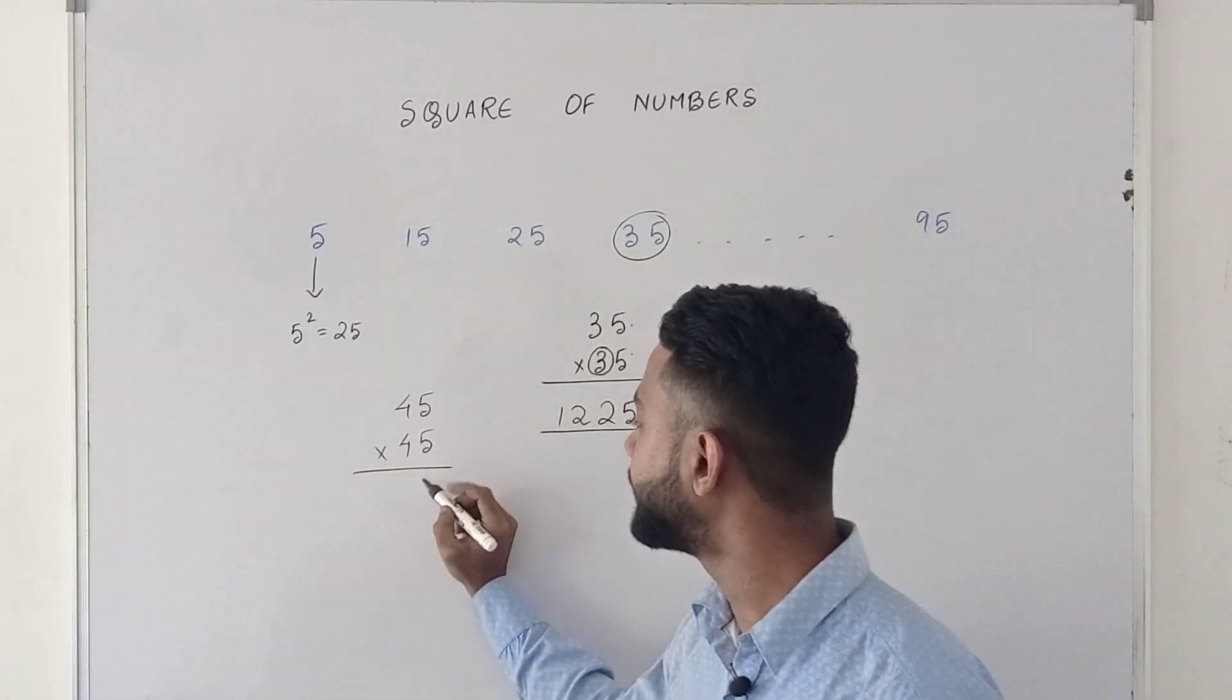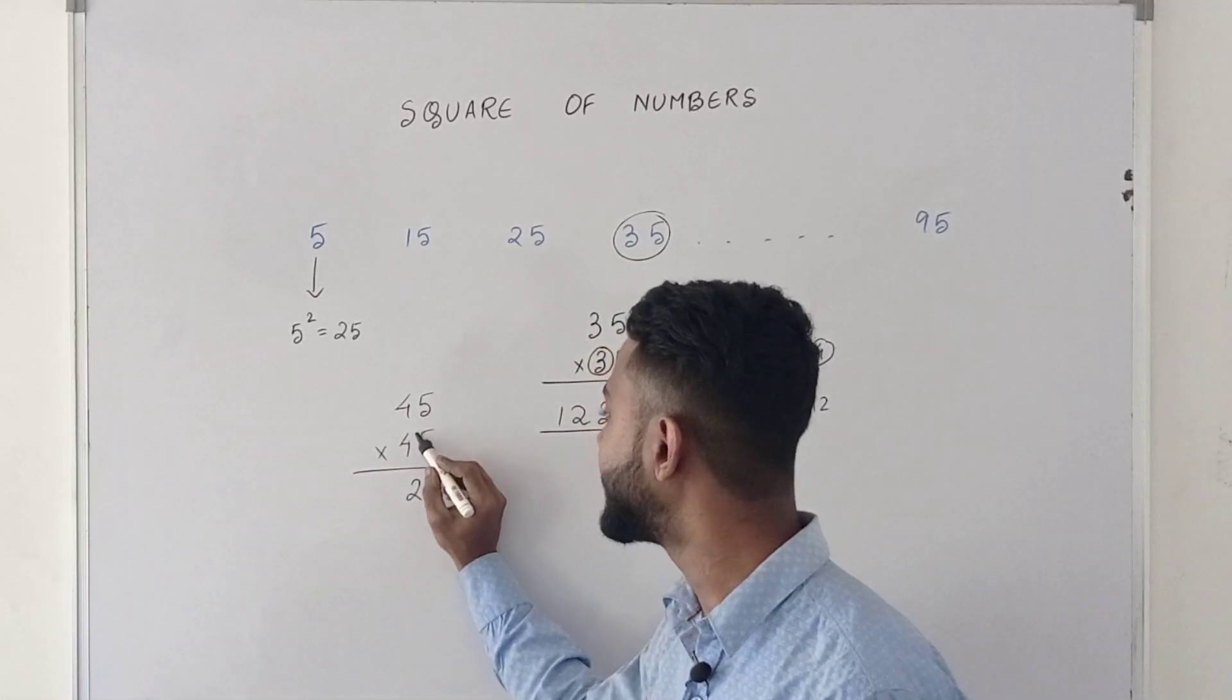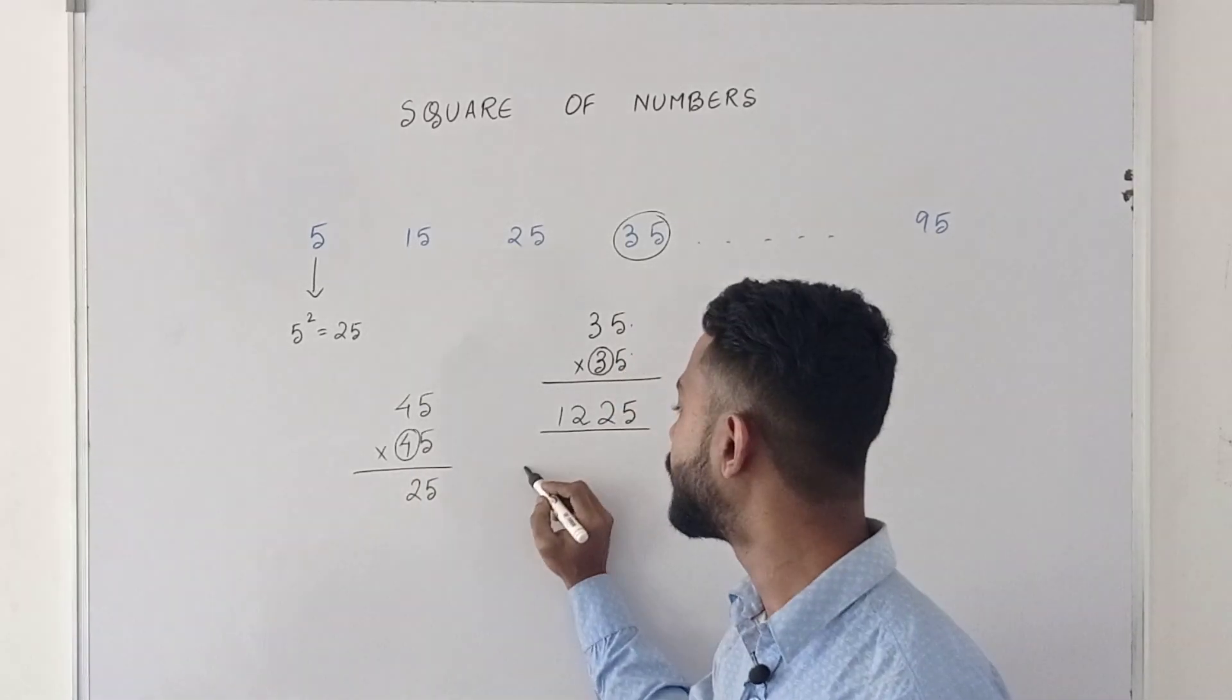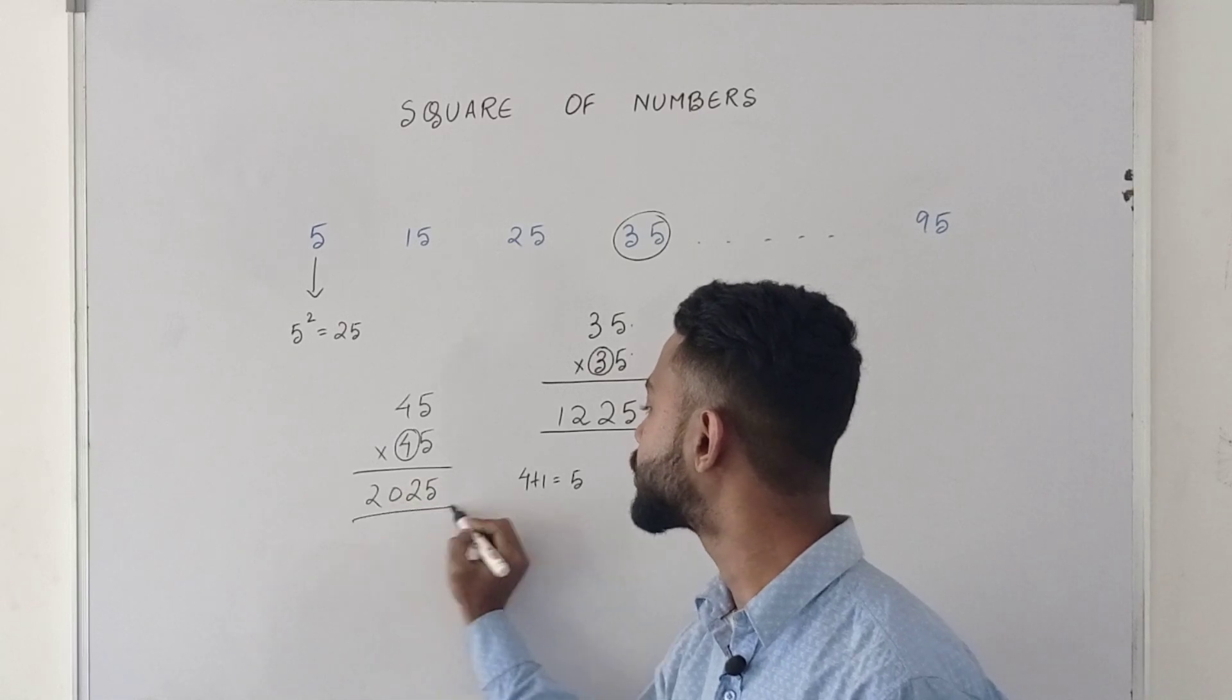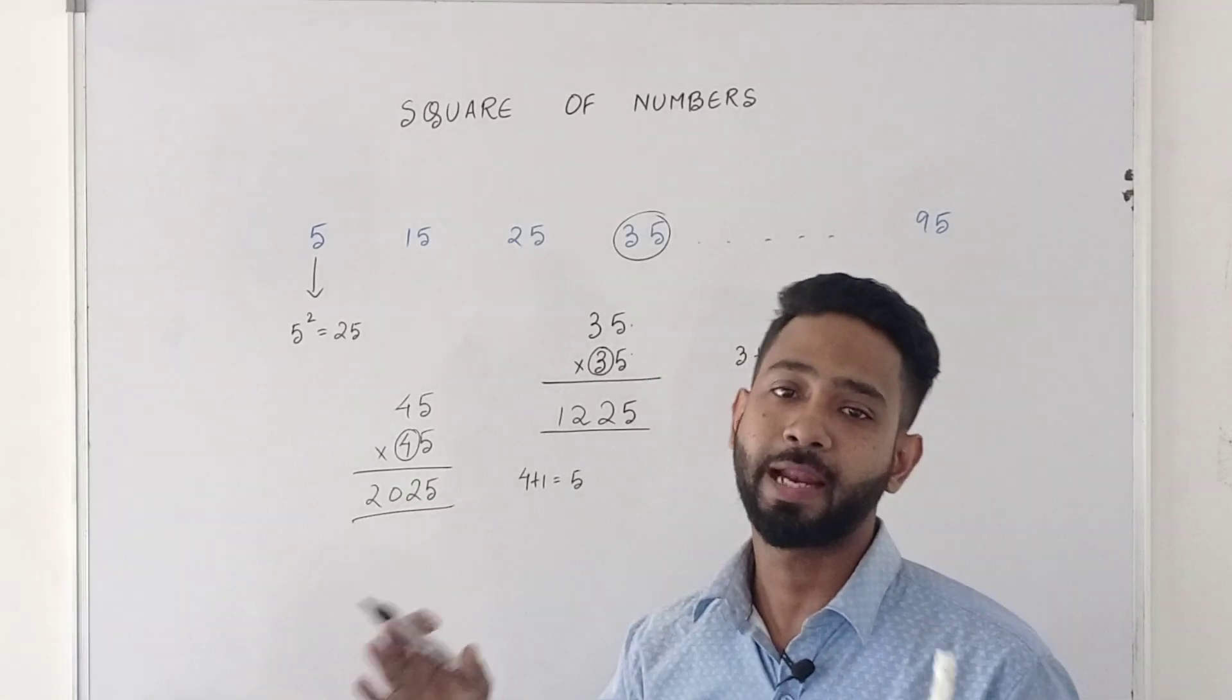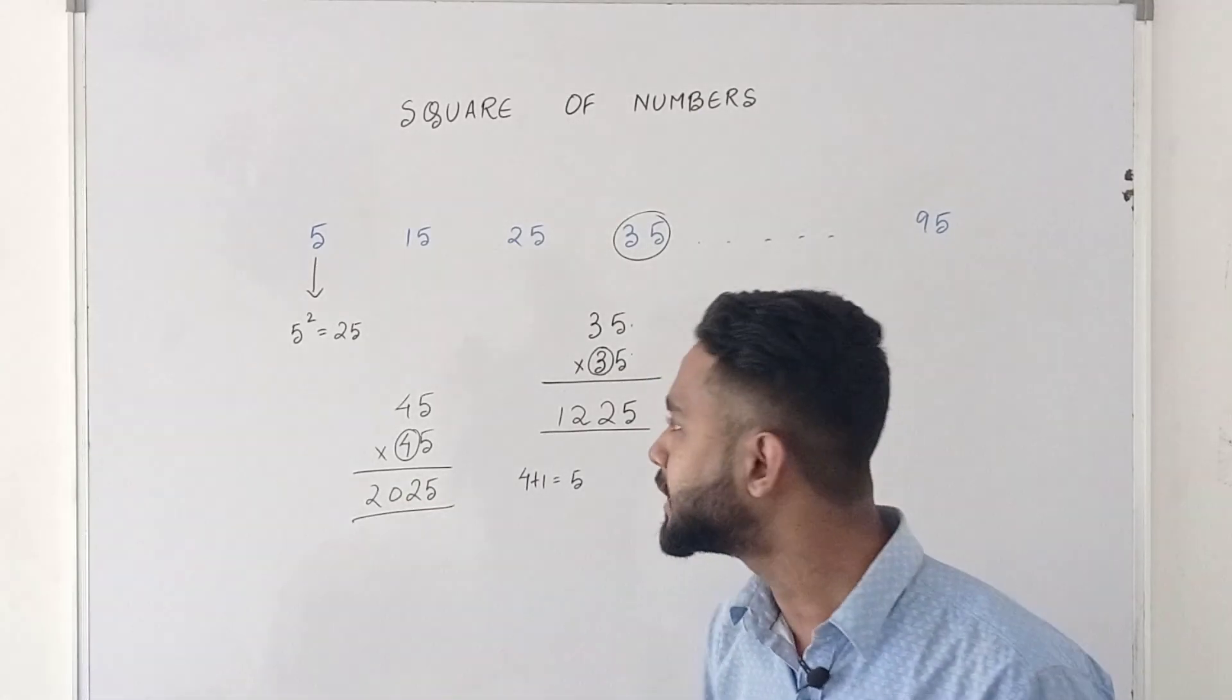5 into 5 that is 25. So to left hand side of the number 4, I 1 add. So 4 plus 1, that is 5. So next 5 into 4 that is 20. So your square would be 2025. So that is how you can find out those squares of any numbers that is multiple of 5.